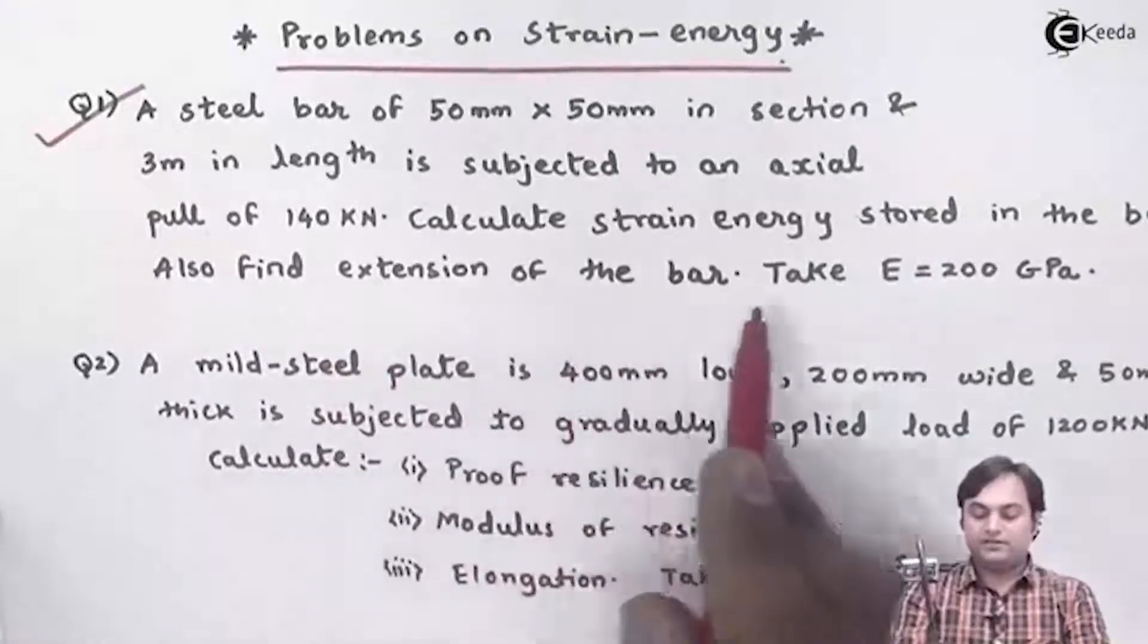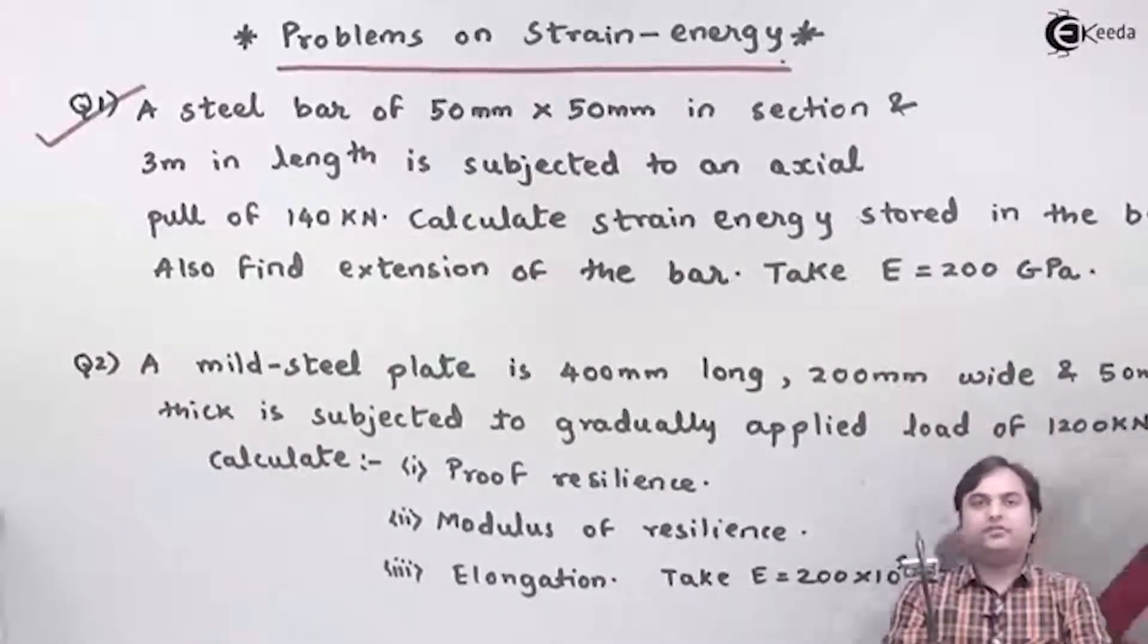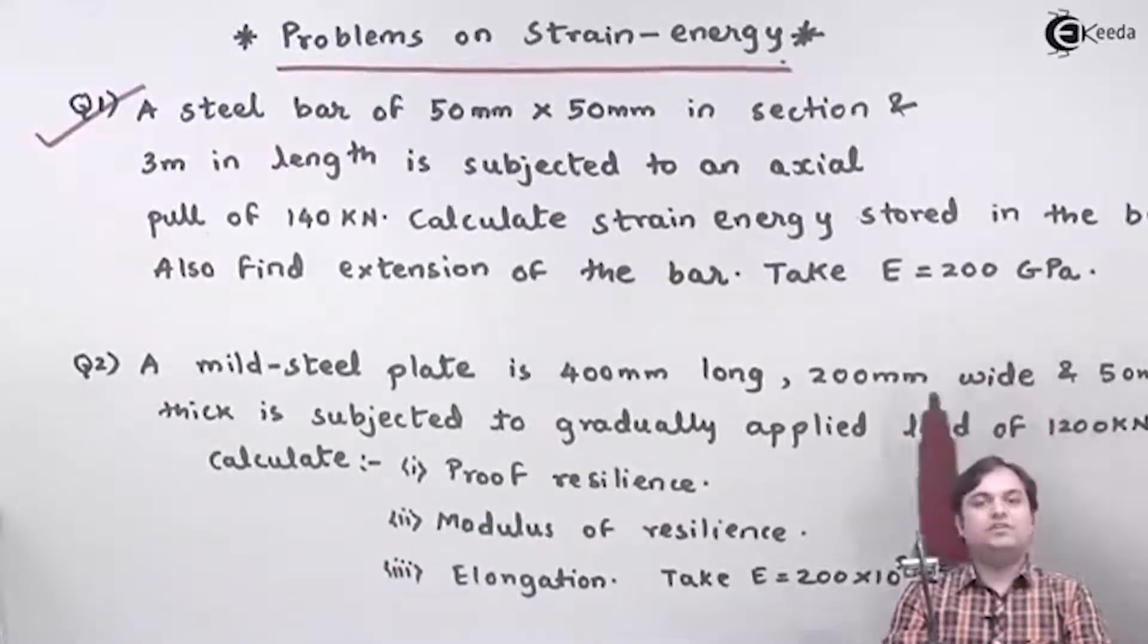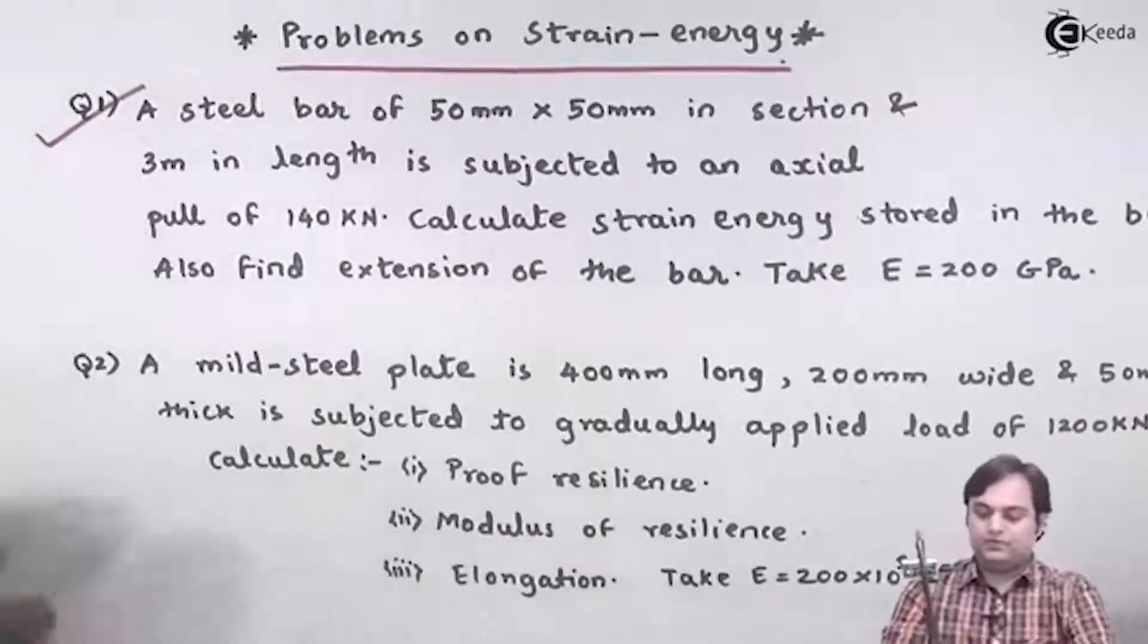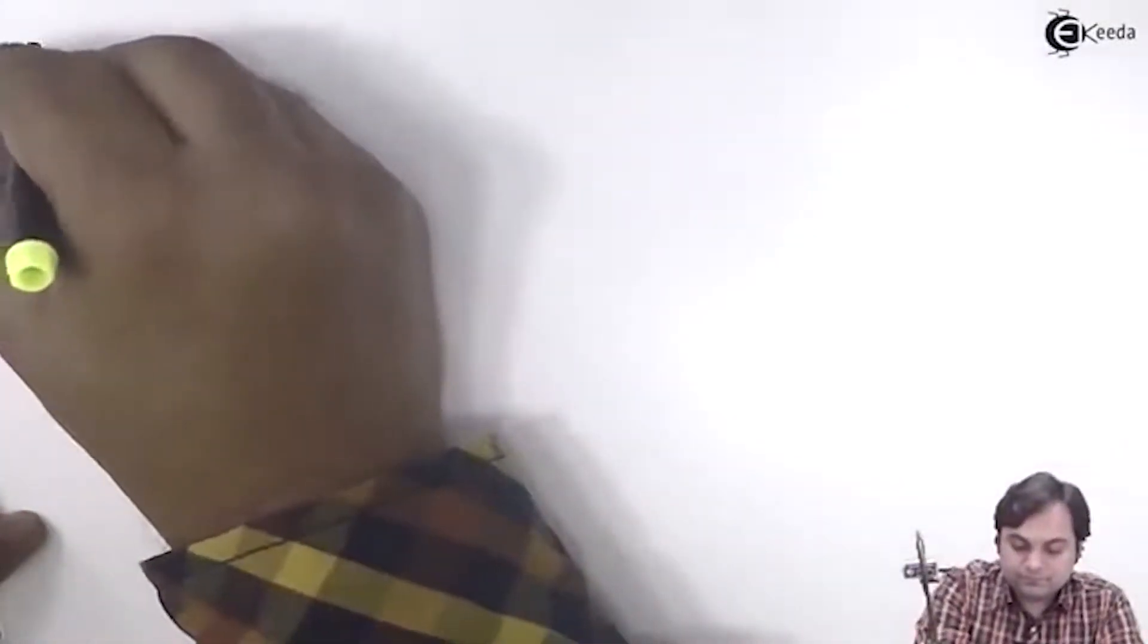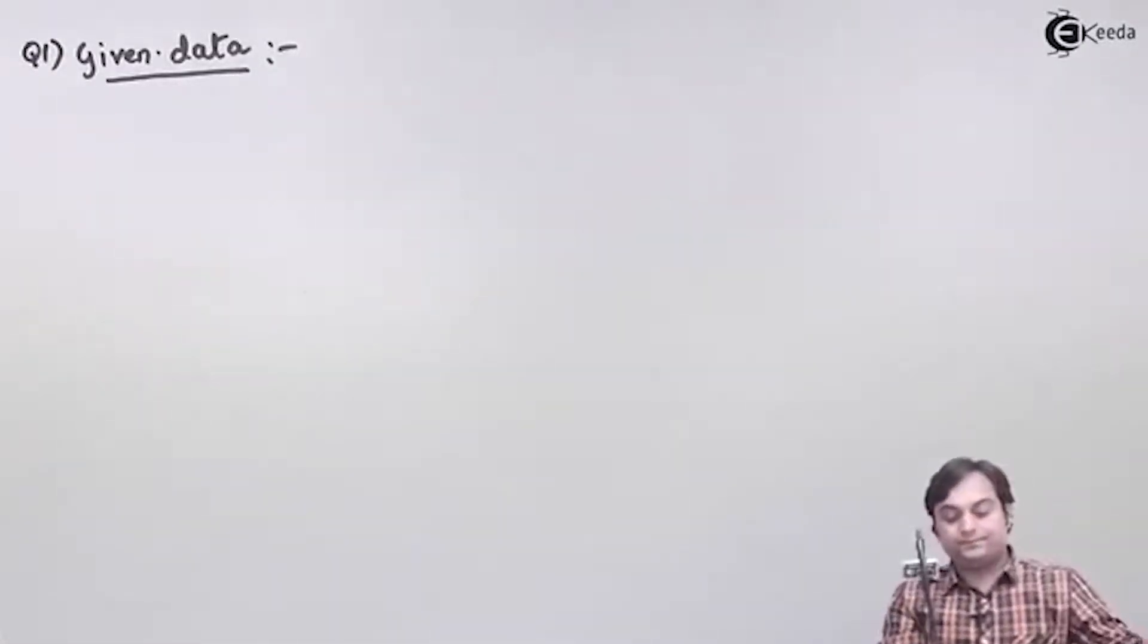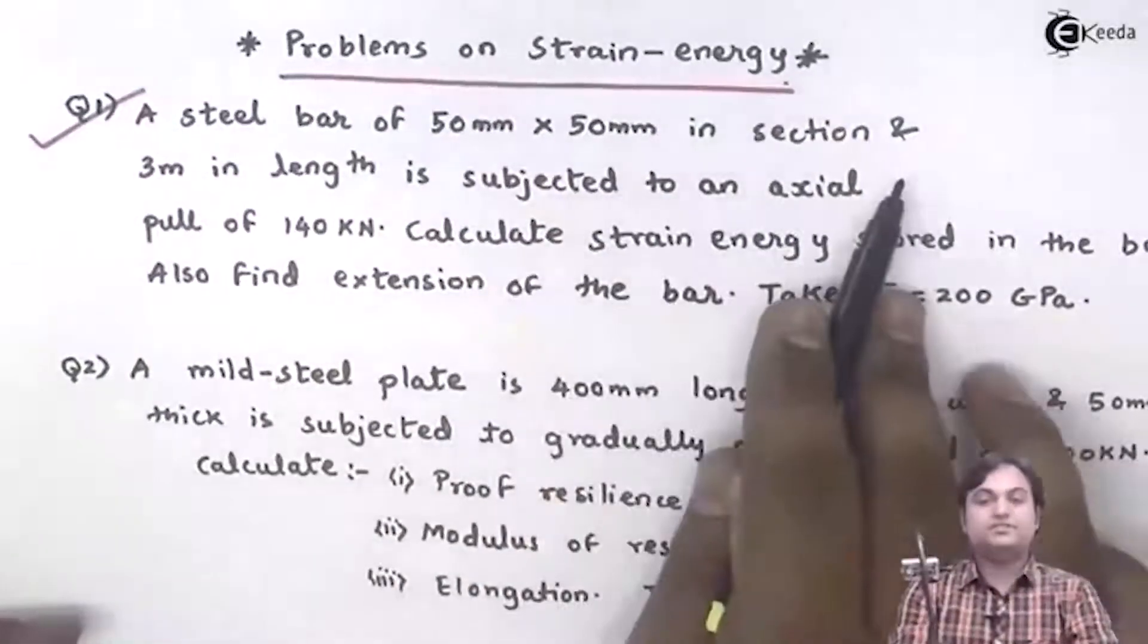Also find extension of the bar. Take capital E as 200 GPa. This is the question which we have in front of us. Based on the question which is given, we will write the data. We are into question number one on strain energy. Here it is given that a steel bar of 50 mm into 50 mm in section.